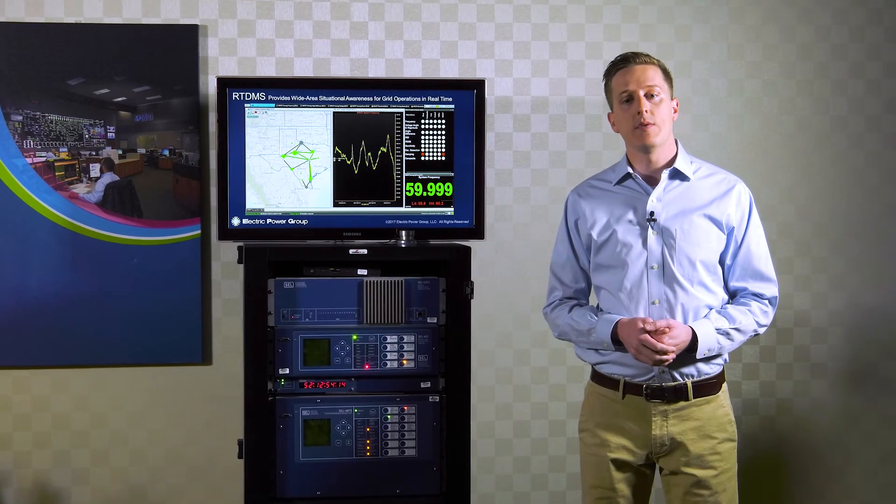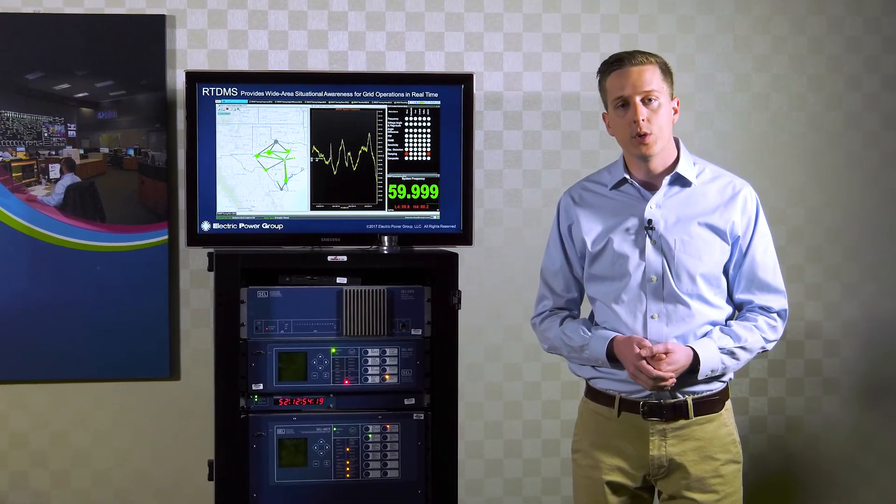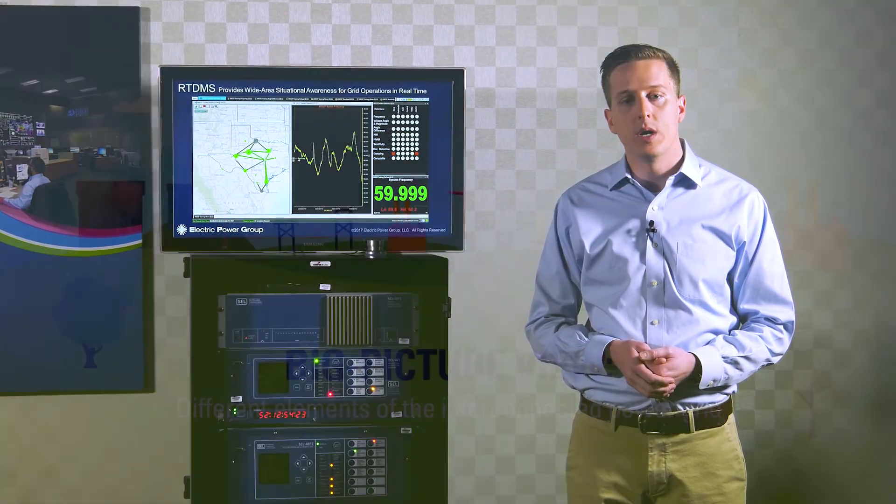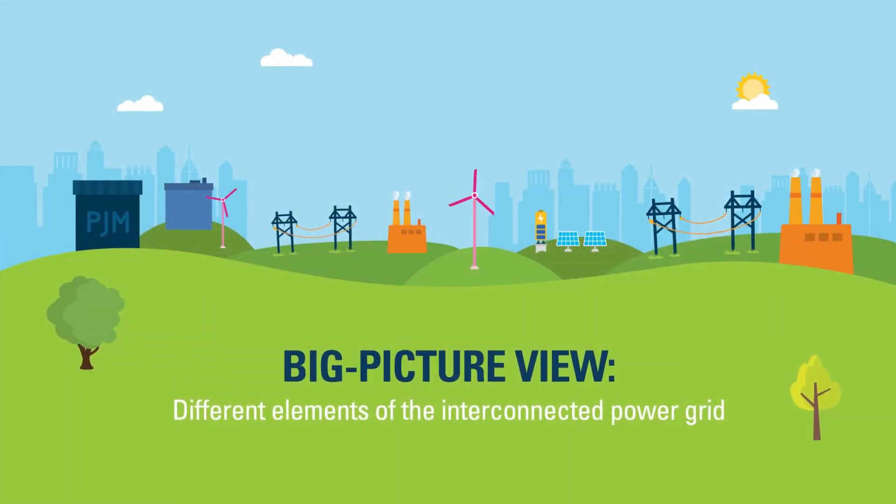PJM uses this high resolution data collected from different points on the electric grid to closely monitor the grid on a 24-7 basis. Having synchrophasers installed across the system allows the operators to view it as one big picture.